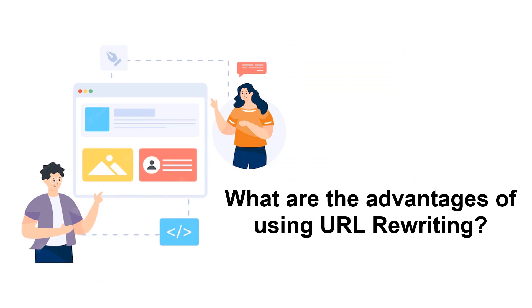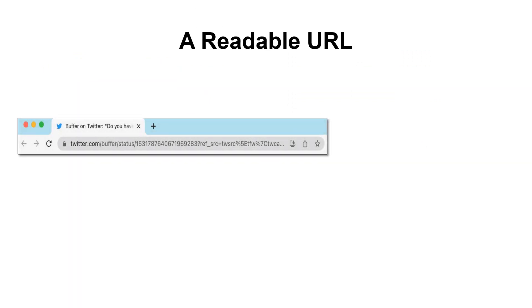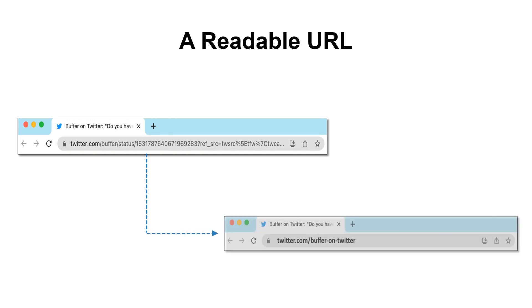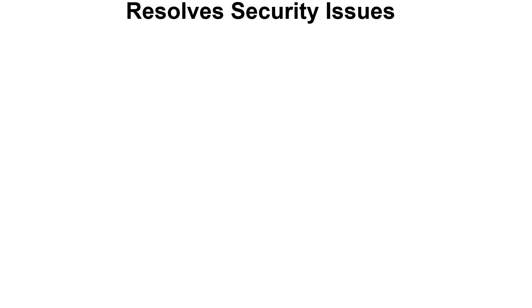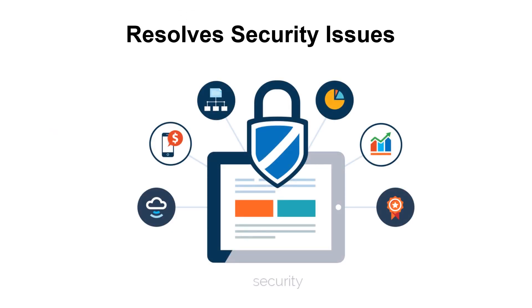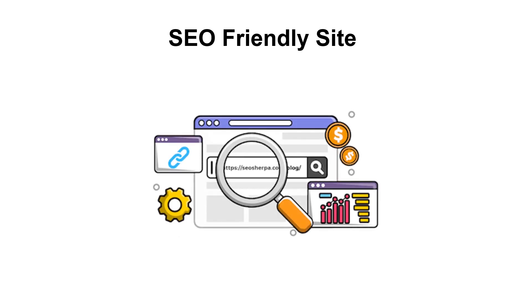What are the advantages of using URL rewriting? A readable URL — with the help of URL rewriting, you can make the URL more readable by removing all the unnecessary extensions and directories from the URL. Resolve security issues — setting URL rewriting will increase the website's security as the URL structure is hidden from regular users. SEO-friendly site — URL rewriting will help make the URL SEO-friendly by using relevant, common language in the URL, which helps in SEO.